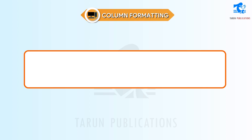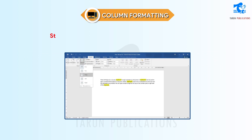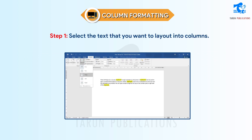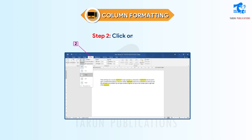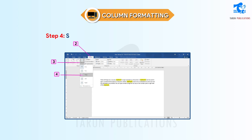Column Formatting. In Word 2016, the default column setting for the text is single column, but we can change that. Follow these steps to change the layout of the text into columns. Step 1: Select the text that you want to lay out into columns. Step 2: Click on the Layout tab. Step 3: Select the Columns command in the Page Setup group. Step 4: Select the number of columns from the drop-down menu.